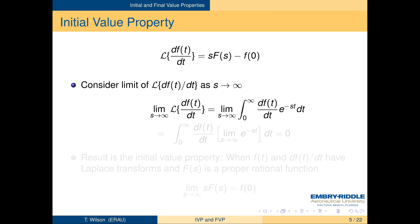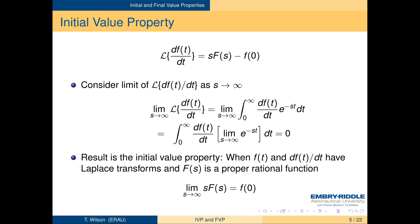To derive the initial value property, we consider what happens to the Laplace transform of df/dt as s goes to infinity. We take the limit into the integral and recall that the region of convergence is always a right half plane, so that e to the minus st goes to 0 as s goes to infinity, and so does the Laplace transform of the derivative. Plugging this in, s·F(s) goes to f(0) in the limit as s goes to infinity.